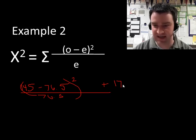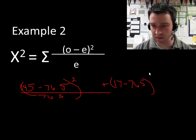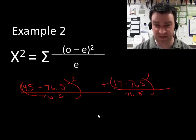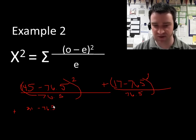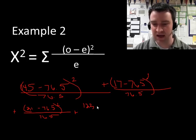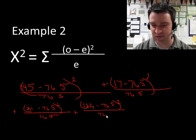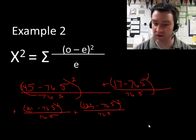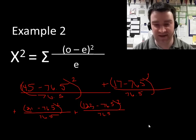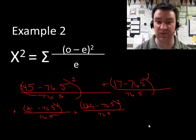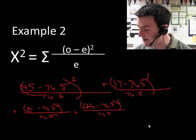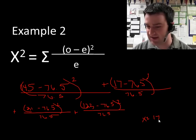We take every single data point and apply the formula. For the 145 double dominant flies: 145 minus 76.5, squared, divided by 76.5. Add to that the 17 flies: 17 minus 76.5, squared, divided by 76.5. Add the 21 flies: 21 minus 76.5, squared, divided by 76.5. And finally the 123 doubly recessive flies: 123 minus 76.5, squared, divided by 76.5. That gives us the total overall difference between what we actually got and what we expected.